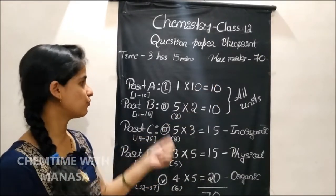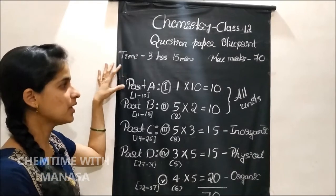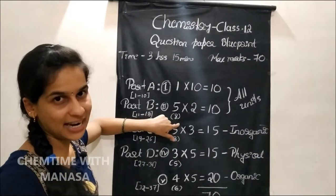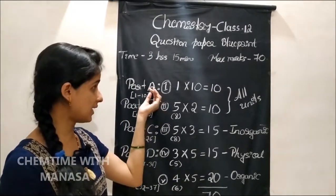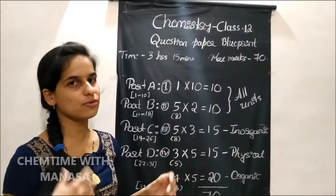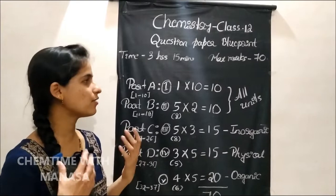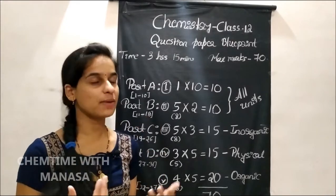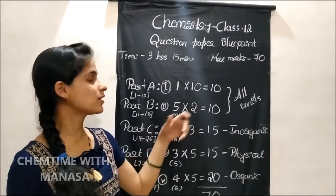These are the marks distribution of each part of the question paper. An important thing to note: in case of Part A, there will be no extra questions for your choice. That means, unlike other parts where, for example, there are 8 questions and you choose any 5, in Part A there will be only 10 questions and you have to write answers for all 10. There will be no extra questions. Friends, Part C and Part D are clear, but you may have doubts in Part A and Part B — like from which chapter 1-mark questions will be asked, or from which section 2-mark questions will appear.